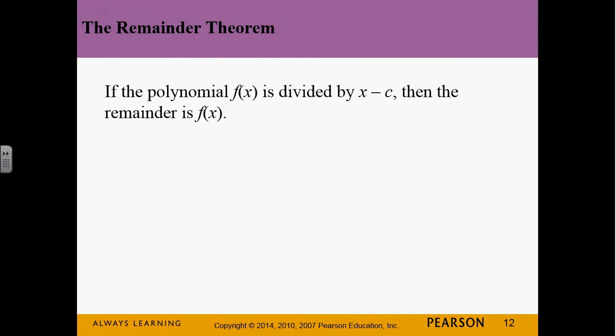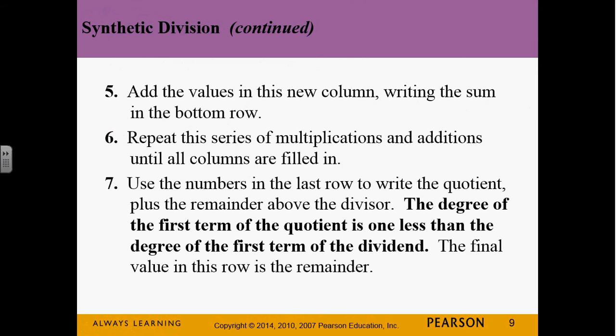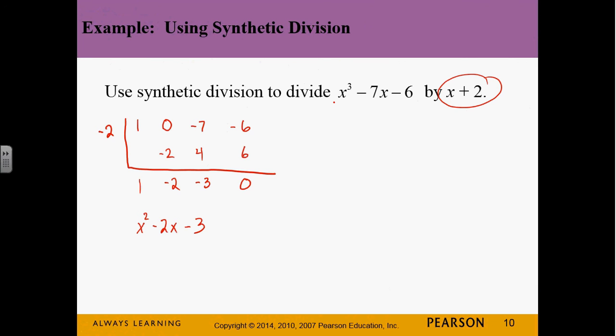Now, we have something called the remainder theorem, which says that if we have a polynomial function and you divide it by x minus c, then whatever the remainder is, that's what you would get if you plugged c into the original equation. In this equation, I divided this function by x plus 2. C was negative 2. That means my remainder, which is zero, is what would happen if I plugged negative 2 into my function.